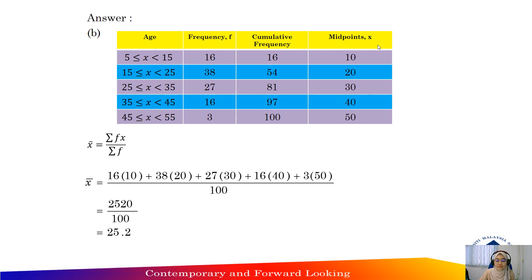I want you to calculate the midpoint for each interval. So add an extra column here to find the midpoint x. Midpoint here is lower boundary plus upper boundary divided by 2, equals 5 plus 15 divided by 2. So you will get 10 here.